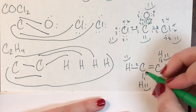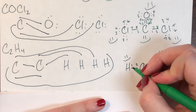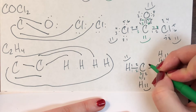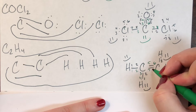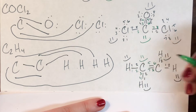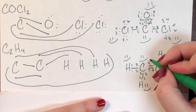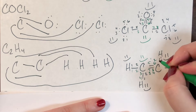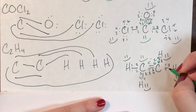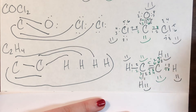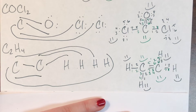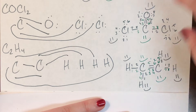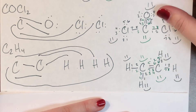For the first carbon, I have access to one, two, three, four, five, six, seven, eight electrons — this carbon is happy. The second carbon also has access to one, two, three, four, five, six, seven, eight electrons — it is also happy. So everybody is good, and this is a valid structure for C2H4.